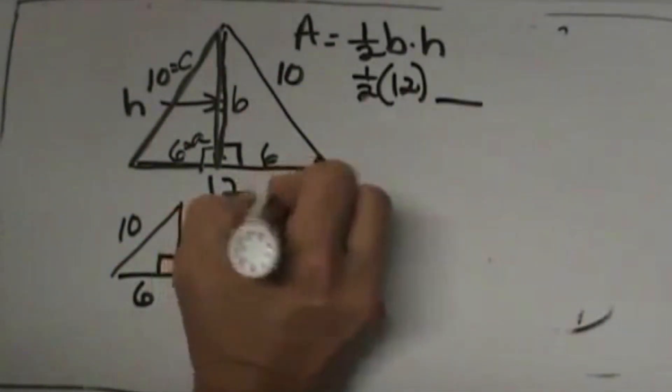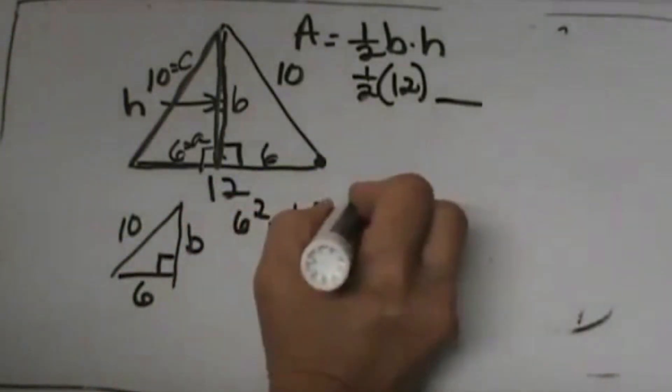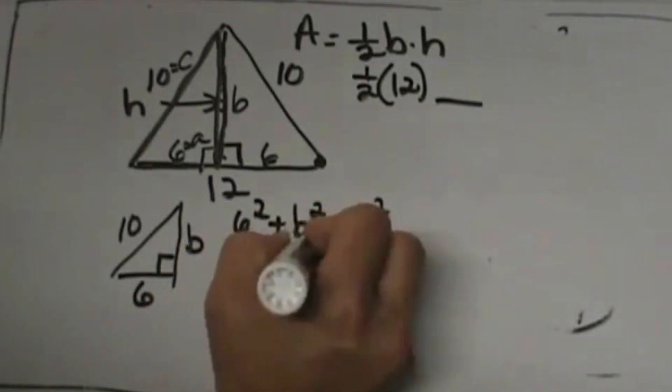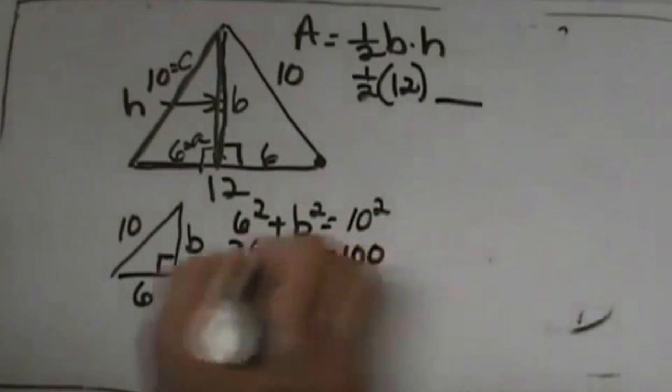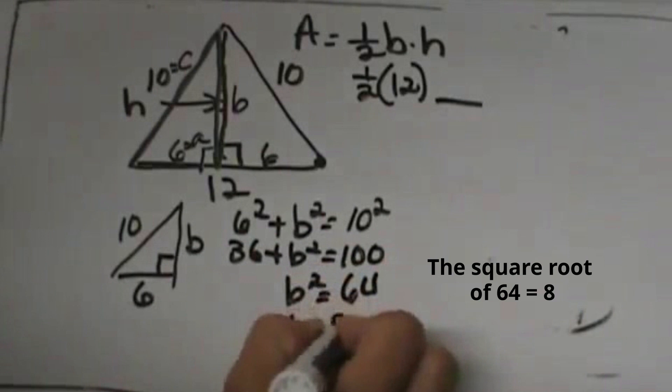So a squared is 6 plus b squared equals c squared which is 10. So 36 plus b squared equals 100. b squared, subtract 36 from both sides, is 64. So b is 8.